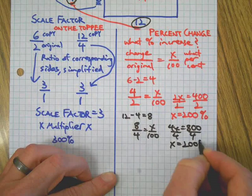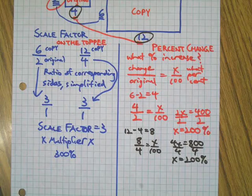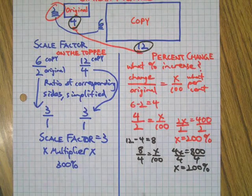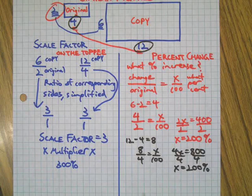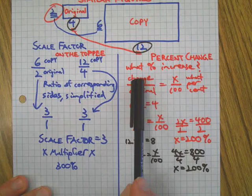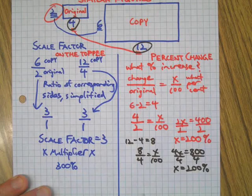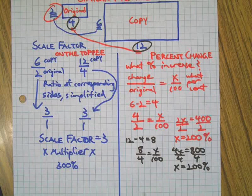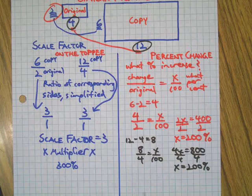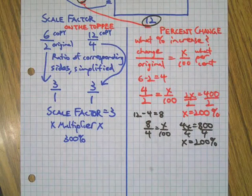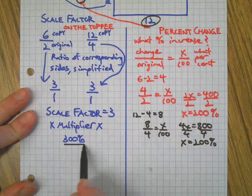All right, so there is our little demonstration of how scale factor, or a number that multiplies the original to get the copy, is different than percent change, which is comparing the amount of change between two things compared to the original. Okay, whoo, a multiplier versus the change, two different things, two different answers. But watch out, because if you're on one of those multiple choice tests, guess what? Two of your choices would be on this problem.